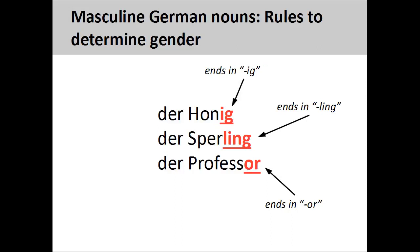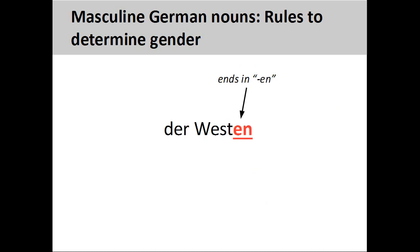Nouns ending in '-ig,' '-ling,' and '-or' — such as 'Honig' (honey), 'Sperling' (sparrow), and 'Professor' (professor) — are masculine. Finally, most nouns ending in '-en,' such as 'Westen' (the west), are masculine.